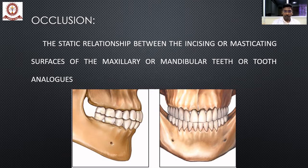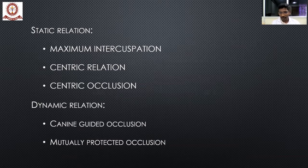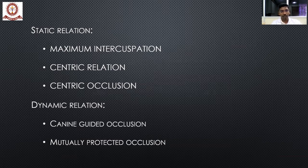Occlusion is further divided into two types: static relationship and dynamic relationship. Under static relation, there are three important concepts — one is maximum intercuspation, second is centric relation, and third is centric occlusion. Under dynamic relation, there are two concepts — canine guided occlusion and mutually protected occlusion.